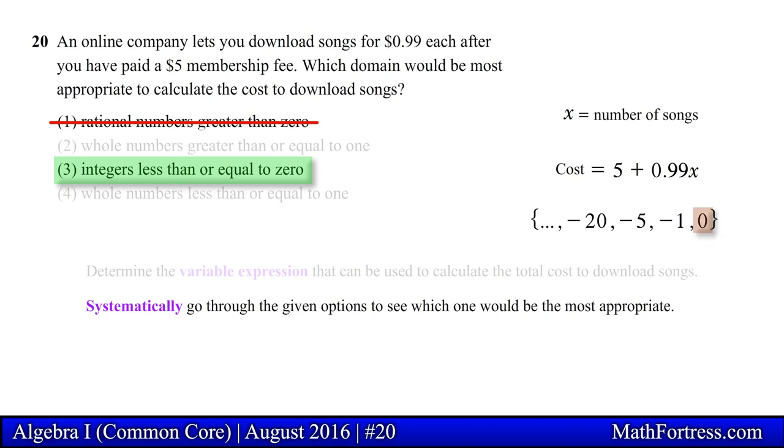The number 0 makes sense since you can decide not to buy a song. But the negative integers means that the online company will actually pay us 99 cents when we decide to purchase a song. So this domain makes no sense. Companies tend to take your money, not give you money.